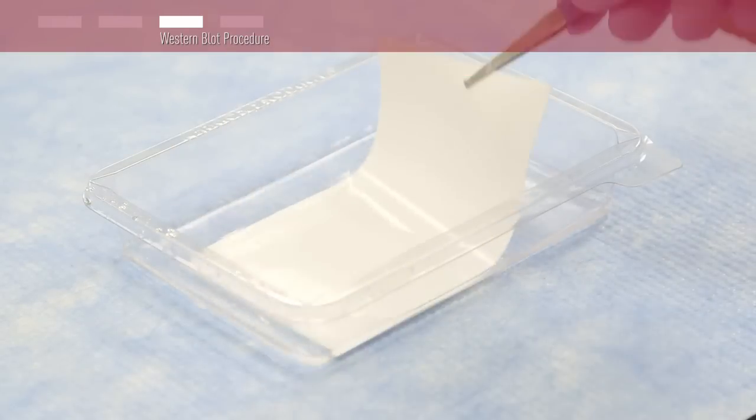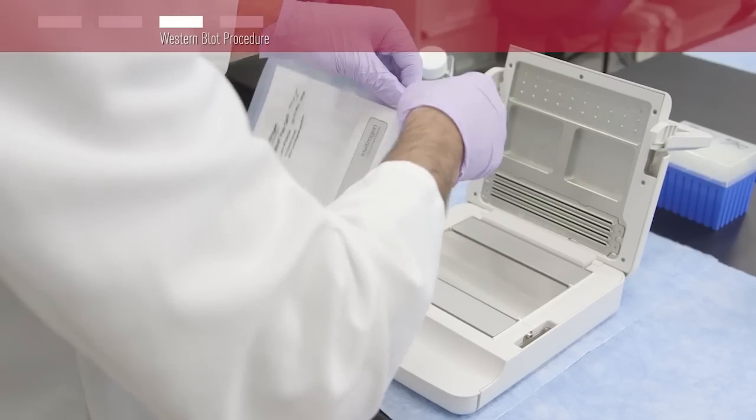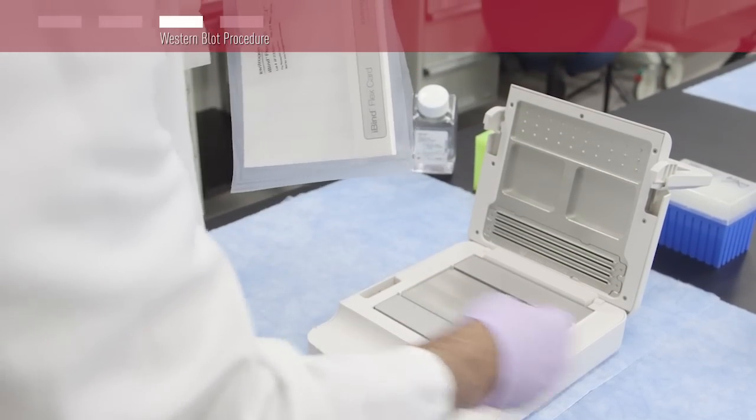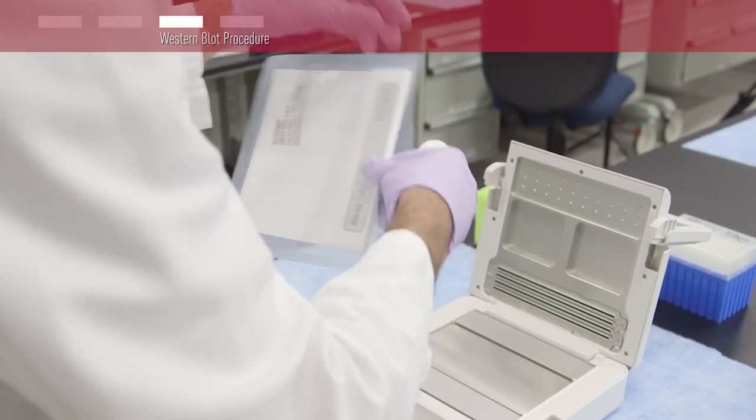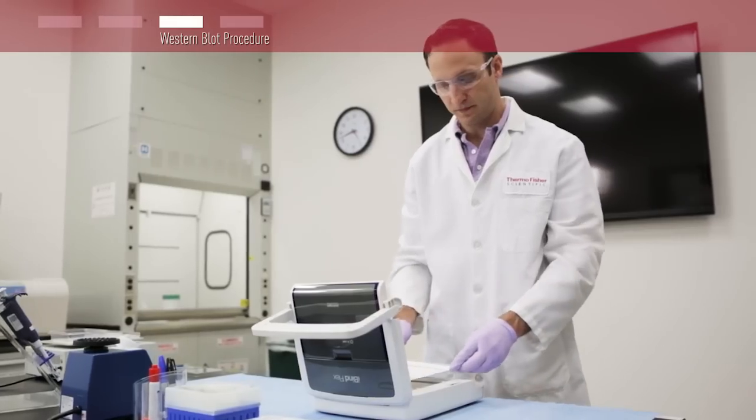Start by placing your blot or blots in 10 milliliters of 1X iBind Flex solution. Remove an iBind Flex card from the pouch, taking care to handle it by the stack only. Place the card in the device, making sure it is aligned against the backstop.